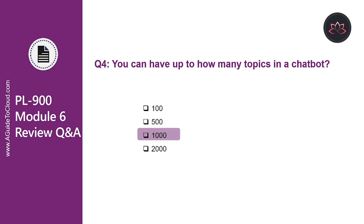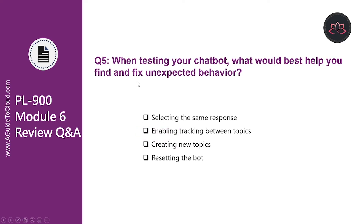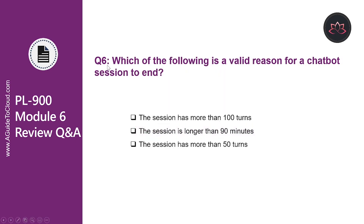You can have up to 1,000 topics in a chatbot. Let's look at question number five. When testing your chatbot, what would best help you find and fix unexpected behavior? The correct answer is enabling tracking between topics. As you fine-tune your chatbot, it can be useful to enable tracking between topics so you can follow through the conversation path step-by-step.